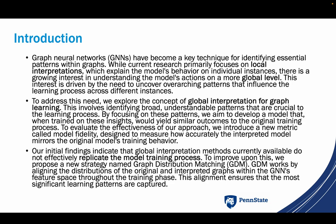Our initial findings indicate that global interpretation methods currently available do not effectively replicate the model training process. To improve upon this, we propose a new strategy named graph distribution matching, short for GDM. GDM works by aligning the distributions of the original and interpreted graphs within the GNN feature space throughout the training phase. This alignment ensures that the most significant learning patterns are captured.